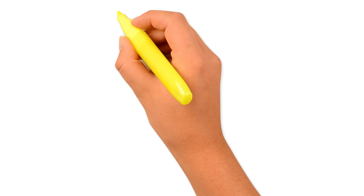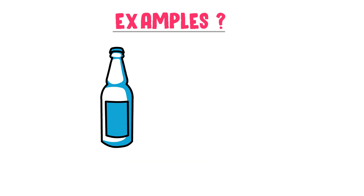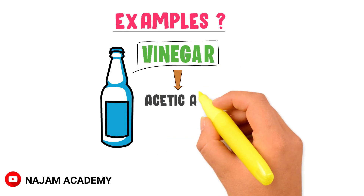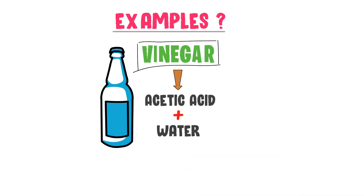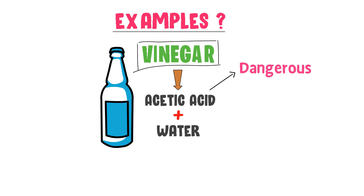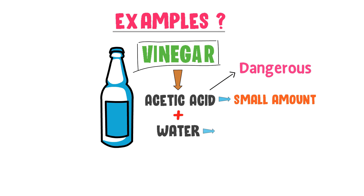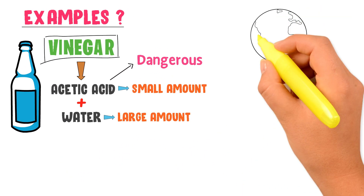Now, what are some examples of Dilute Solution? The best example of Dilute Solution is the vinegar we use at home. Vinegar is made up of acetic acid and water. Acetic acid is dangerous in itself and we cannot use it directly, so to reduce its effects, we dissolve a small amount of acetic acid in a large amount of water to make a Dilute Solution, commonly known as vinegar.